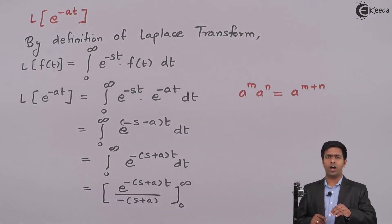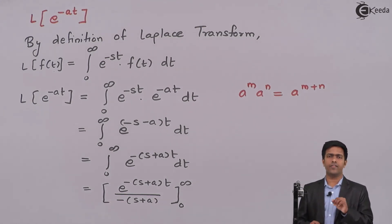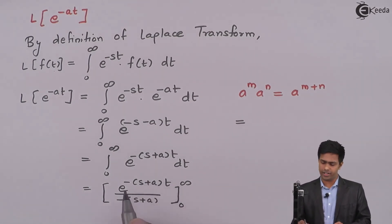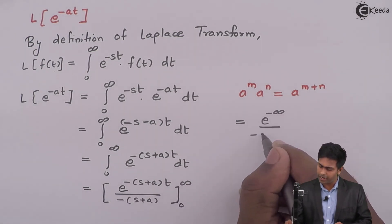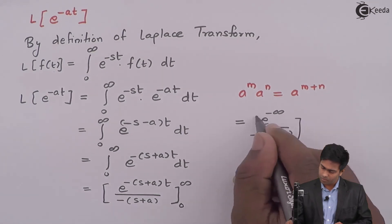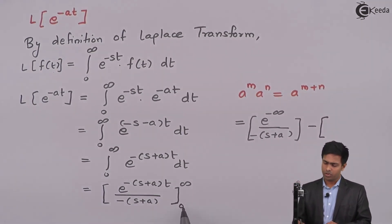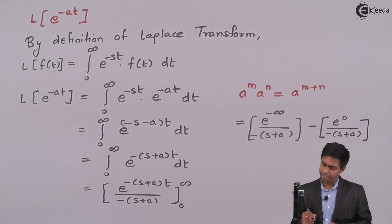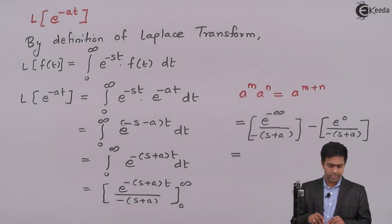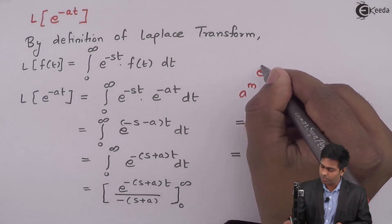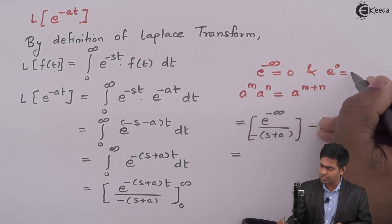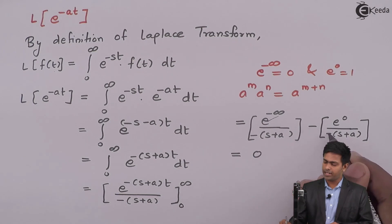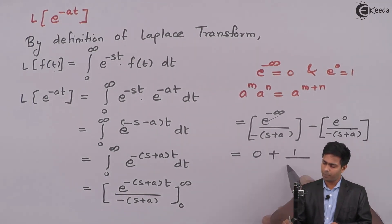We will substitute the upper and lower limits in the function to get the value of the integration. By substituting infinity, we get e raised to minus infinity upon minus of s plus a. The middle sign is negative. Now we will substitute 0, so here we will get e raised to 0 upon minus of s plus a. We know that e raised to minus infinity is 0 and e raised to 0 is equal to 1. So the first term becomes 0, and minus minus gives plus, with e raised to 0 equal to 1 upon s plus a.